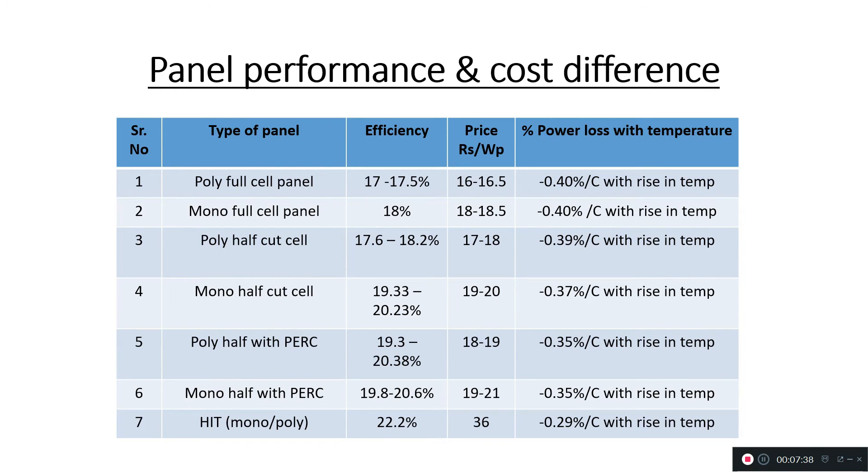As you can see here, normal poly and mono panels have a price difference of about two rupees, so you can take the call as per your particular application. If you want to consider half-cut cell or PERC, you can do that as per the pricing here and their efficiencies are also mentioned.